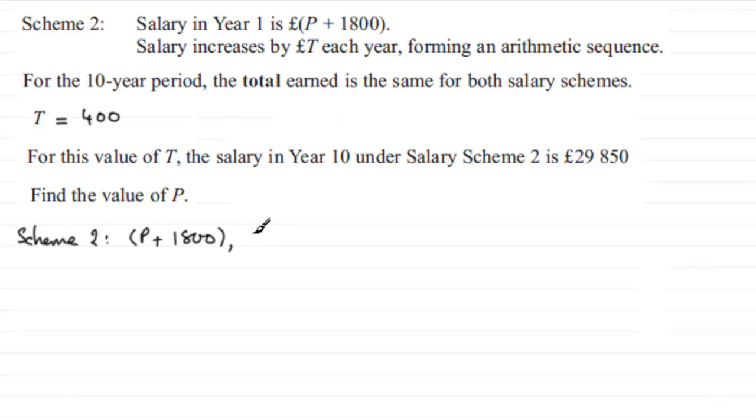In the second year we added on T pounds, so we added on 400 pounds. So in the second year it's going to be P plus 1,800 plus another 400, which is P plus 2,200. And in the next year, the third year, it'll be P plus another 400 pounds onto that, which will be P plus 2,600.